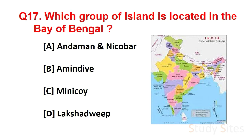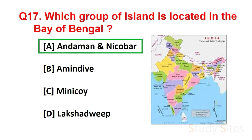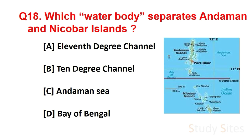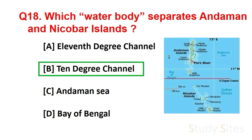Question number 17. Which group of islands is located in the Bay of Bengal? Answer is Andaman and Nicobar. Question number 18. Which water body separates Andaman and Nicobar Islands? Answer is the 10 degree channel.